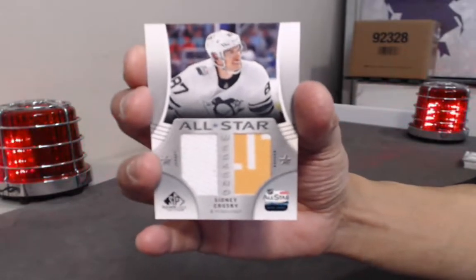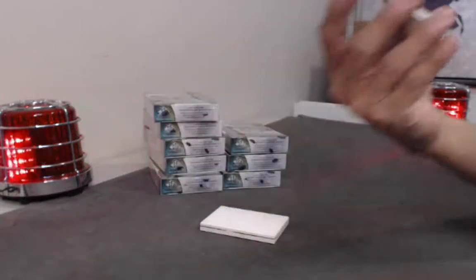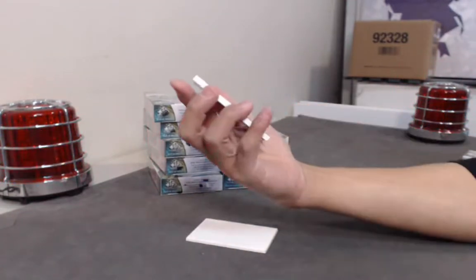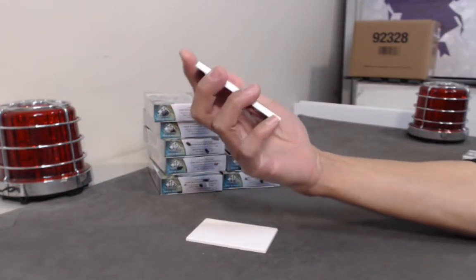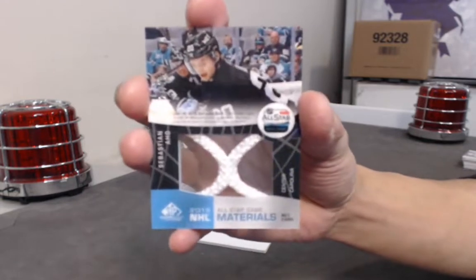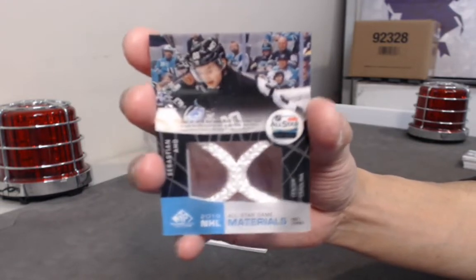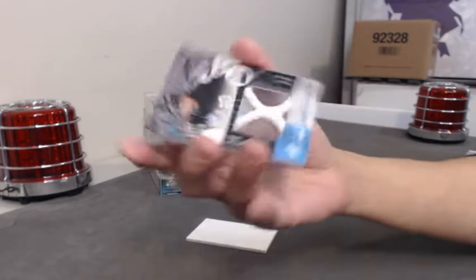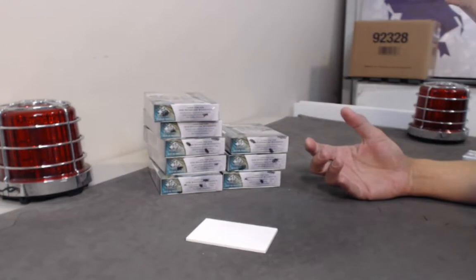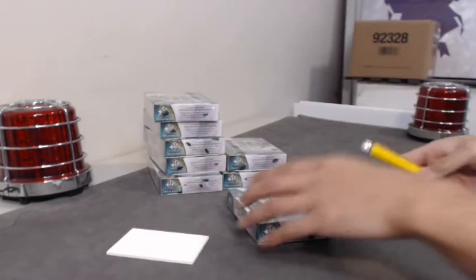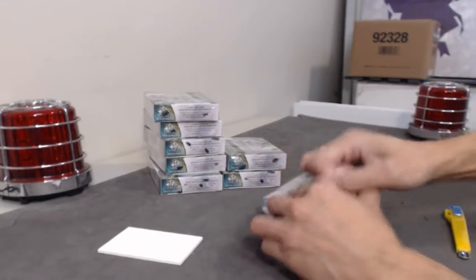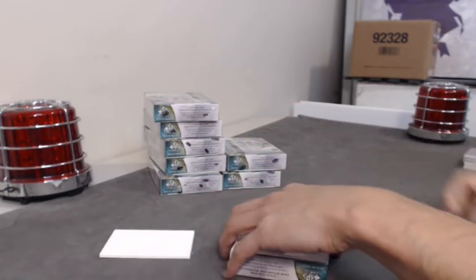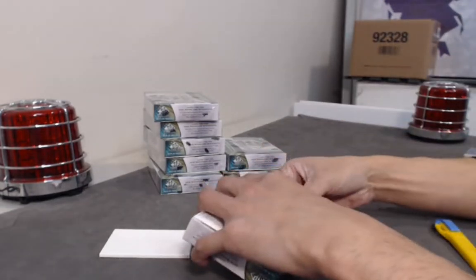Sidney Crosby jersey and banner. Nice. And we have a net cord All-Star Games net cord number to 35, Sebastian Aho. 27 to 35, in case whoever the winner is is wondering. That's the worst when you get sniped last second and you lose by like a quarter or something. And then they hit.